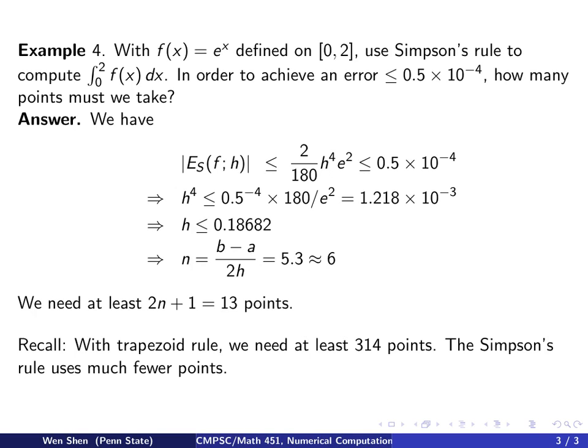So, we see comparing 13 points to the trapezoid rule, which we would have to use 314 points, we see that Simpson's rule is far more superior. You only take 13 points, you only need to do 13 function evaluations versus 314 function evaluations. The CPU time is totally different.